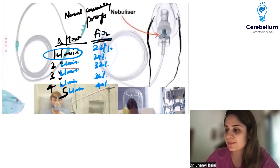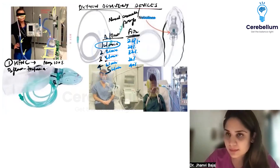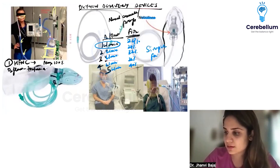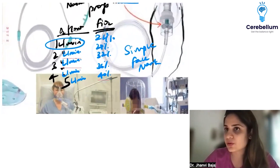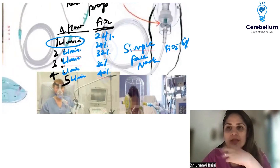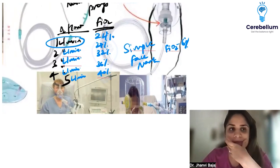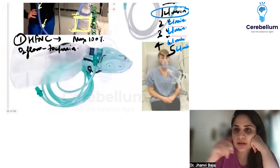The mask we normally use is called the Hudson mask or simple face mask. The maximum FiO2 through the Hudson mask or simple face mask is 60%. The maximum oxygen flow that can be given through the simple face mask is 10 liters per minute.